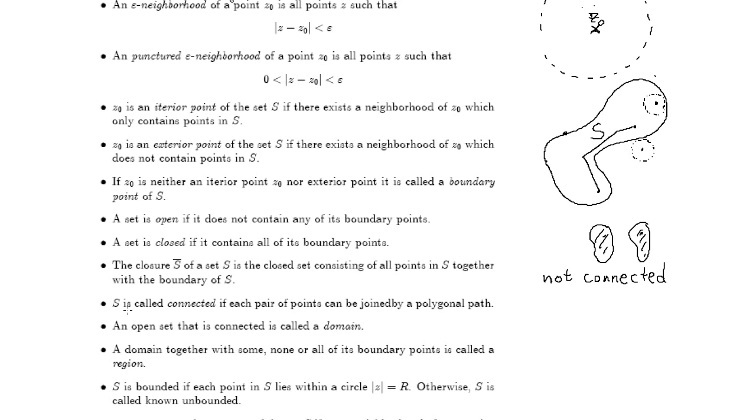The set is called connected if an open set, sorry, an open set that is connected is called a domain. A domain together with some or none of its boundary points is called a region. So a region is more general than a domain.